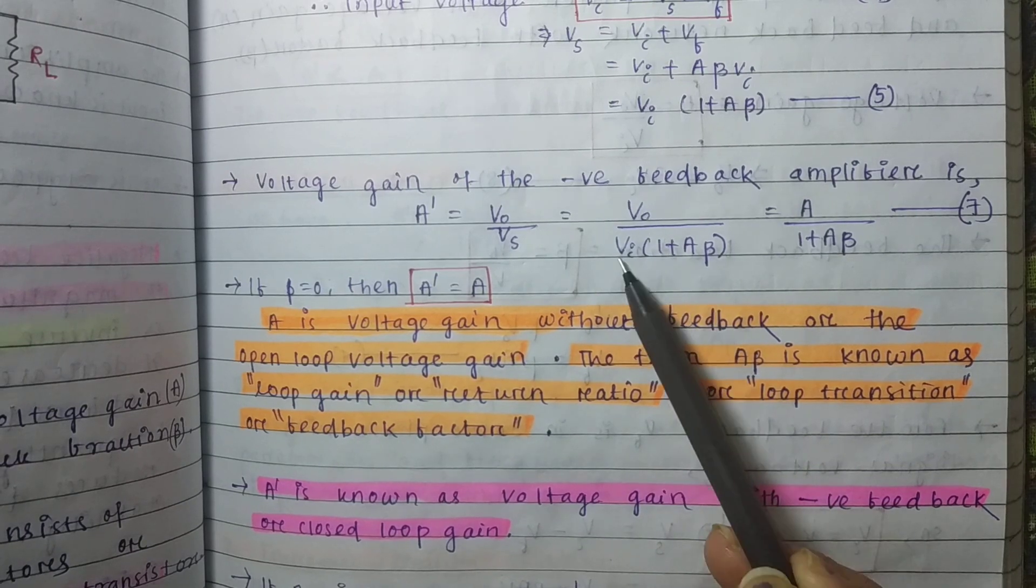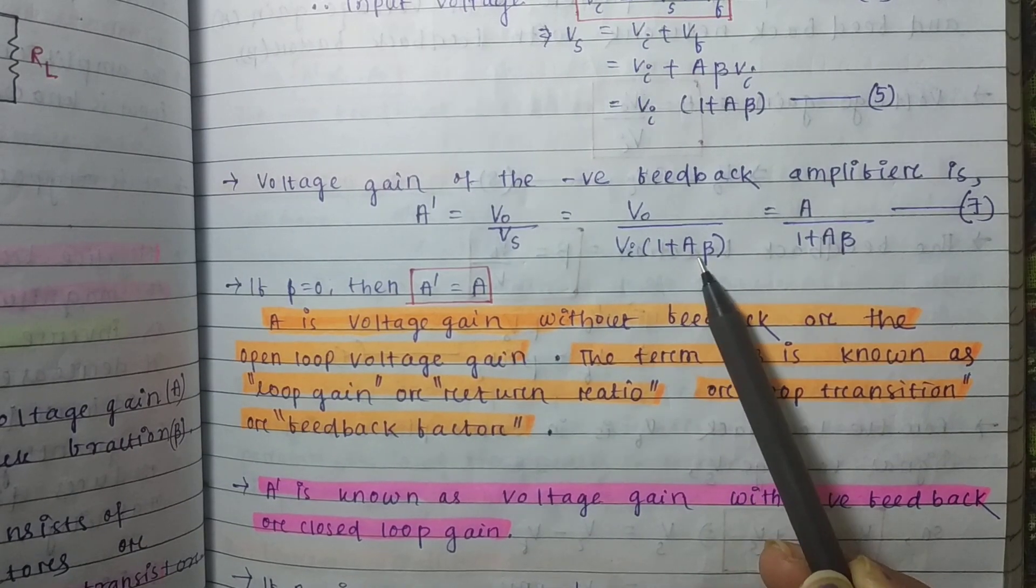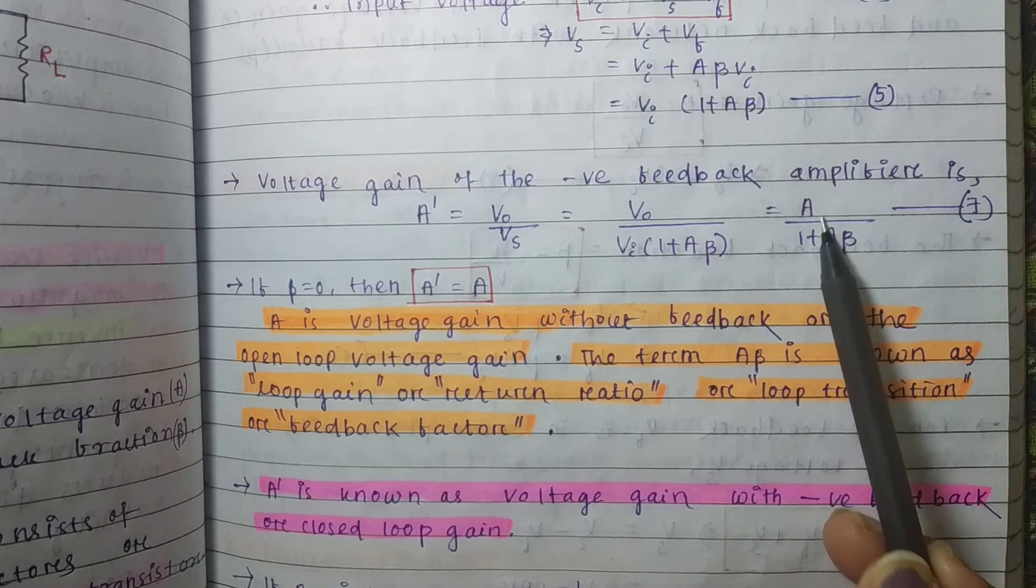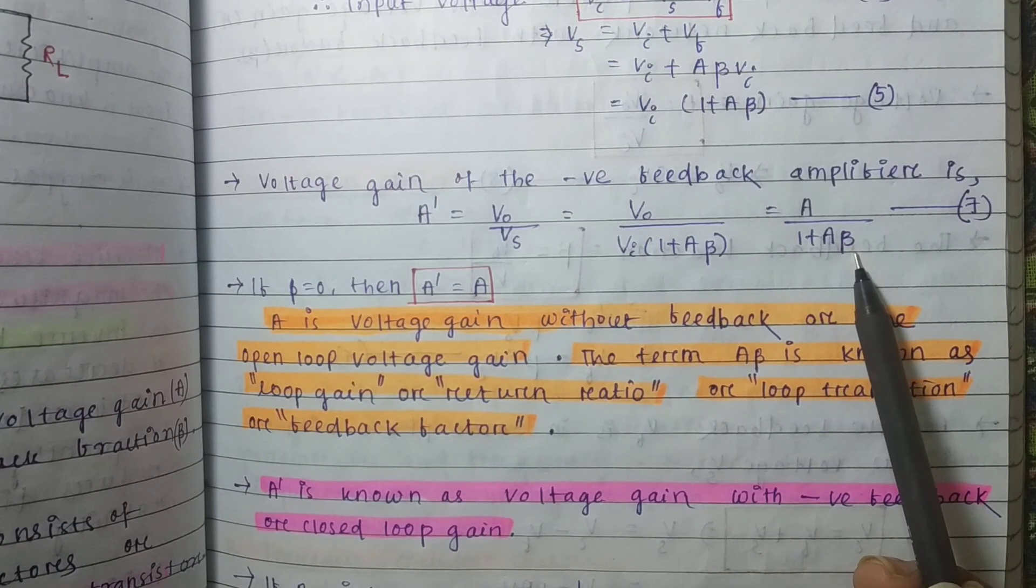It will be Vo by Vi into 1 plus A beta equals A by 1 plus A beta.